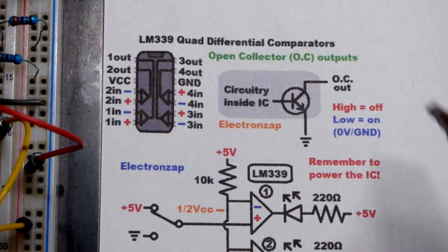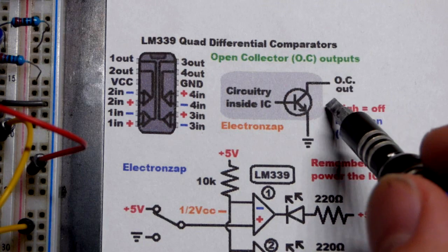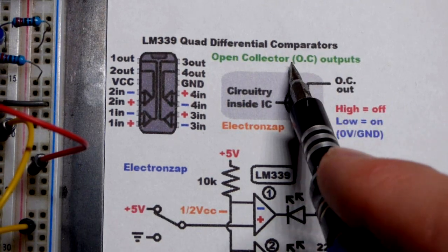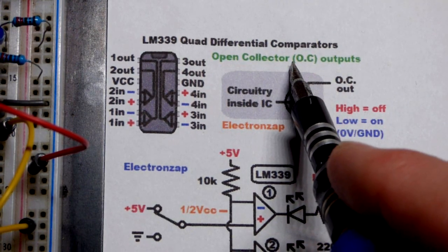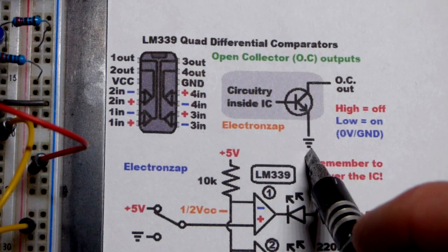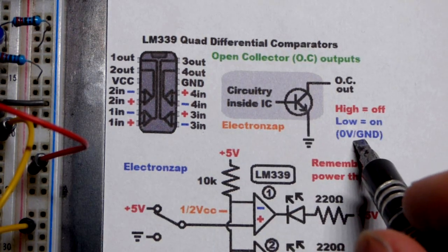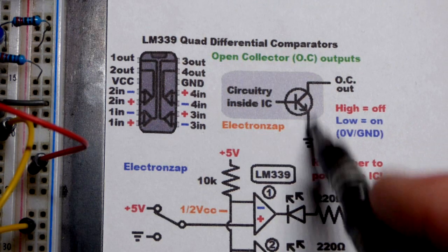We have the output as I said. It's open collector. So it's either off. So it's just a wire sitting there, not connected to anything. Or the transistor turns on, which is when the output is low. Then you have a connection to ground.